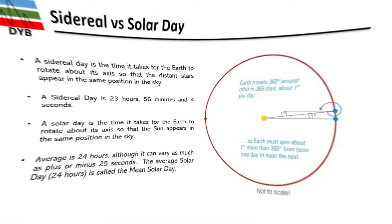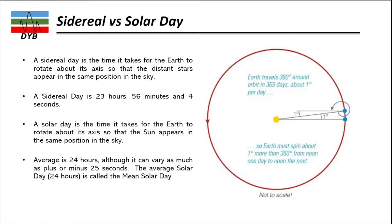The sidereal day is the time it takes for Earth to rotate about its axis so that a distant star — not the Sun — appears in the same position in the sky. If you observe a star today, after exactly 23 hours 56 minutes and 4 seconds that star will return to the same position. That duration is the sidereal day.